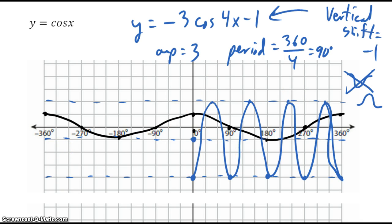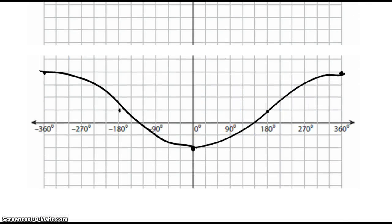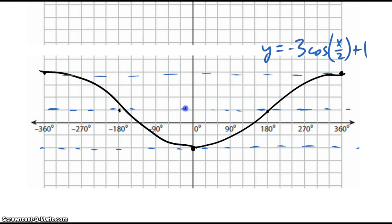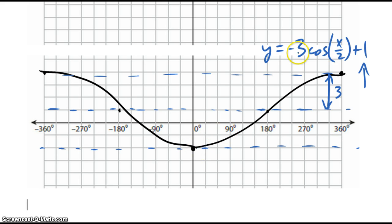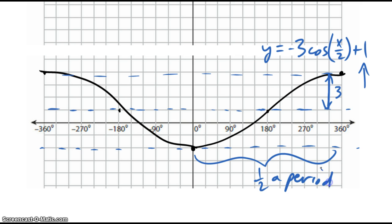Now you try: see if you can write the equation for this cosine curve — pause and figure it out. The middle line goes through 1, so the vertical shift is 1. The amplitude is 3 — the distance from peak to valley is 6, and half of that is 3. It starts at the bottom, so it's a negative cosine. The period shows only half a wave over 360 degrees, so b equals one-half, meaning it's x over 2. I hope you learned a thing or two — see you next time!